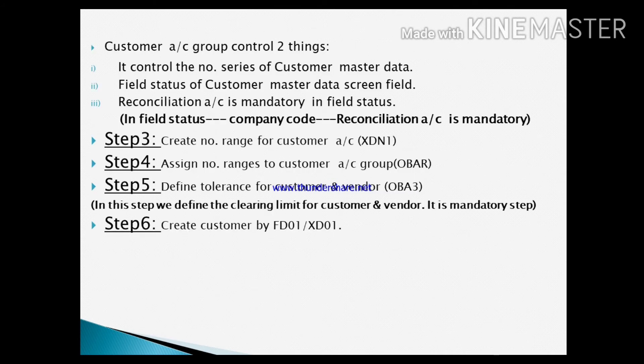Customer account groups control two things: first, the number series of customer master data; second, the field status of the customer master data screen. Here the reconciliation account is set as mandatory in the field status, as we have configured. Now Step 3: Create number range for customer accounts under T-code XDN1.